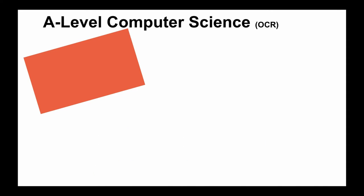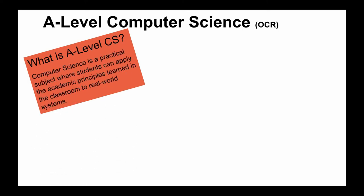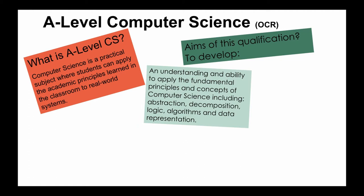We're now going to look at A-Level Computer Science. Mr. Sturdy, the head of computer science, has put together a slide on what A-Level Computer Science is all about. It's a practical subject where you apply the academic principles learned in the classroom to real world systems, so you will learn the theory of computing but also how to apply that to real world scenarios. You will develop an understanding and ability to apply the fundamental principles of computing including abstraction, decomposition, logic, algorithms, and data representation — some of which you will recognise from GCSE.